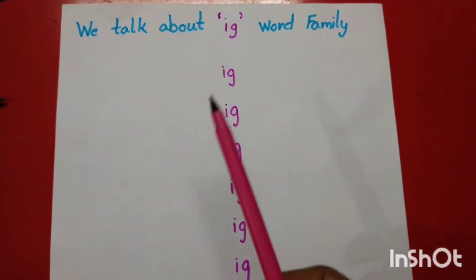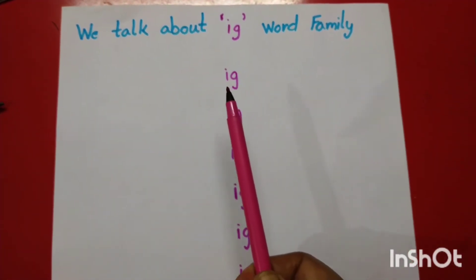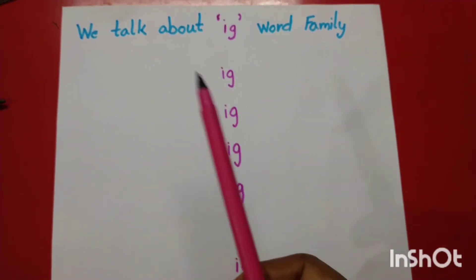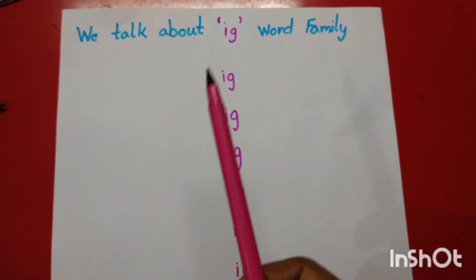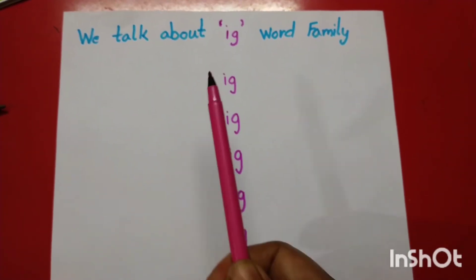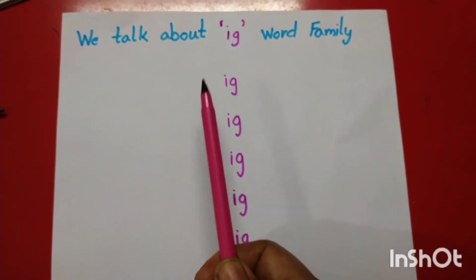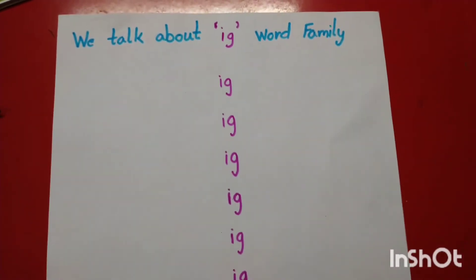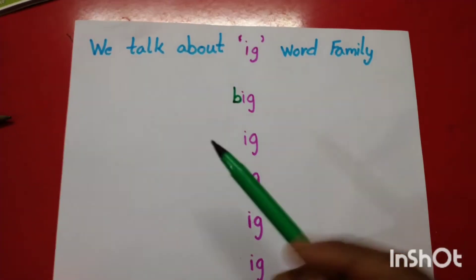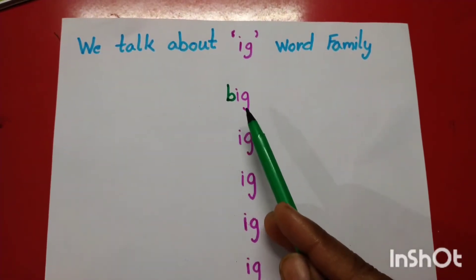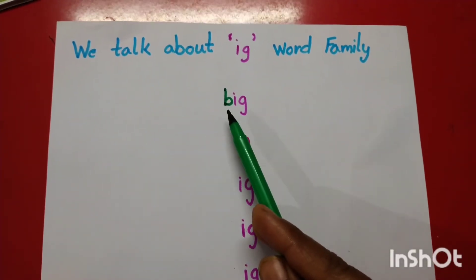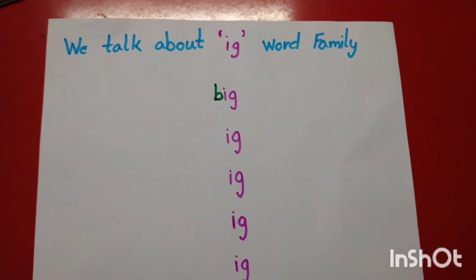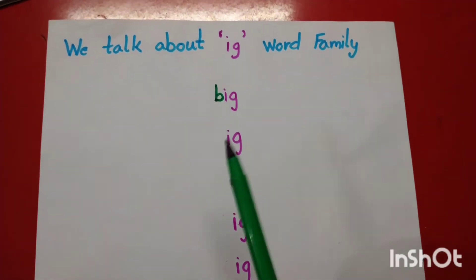First of all, Ig ki friendship hum karayenge letter B se. Right here letter B. Speak the sound of letter B. B, Ig, Big.